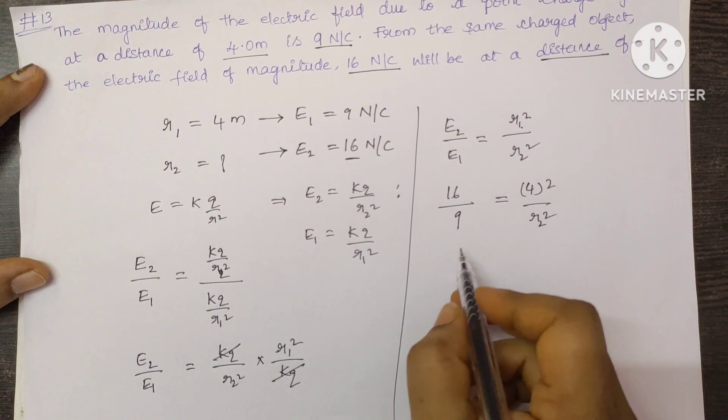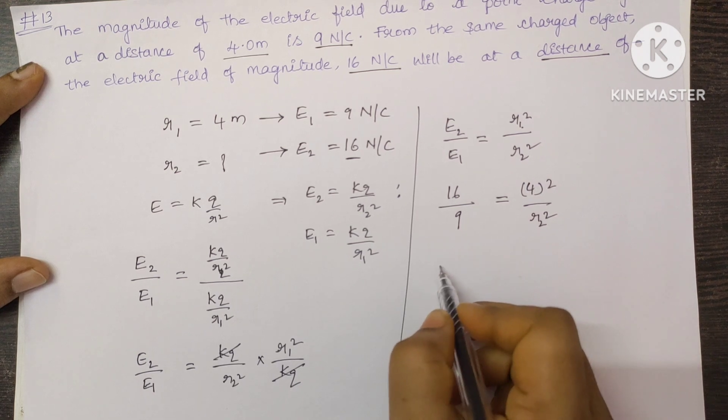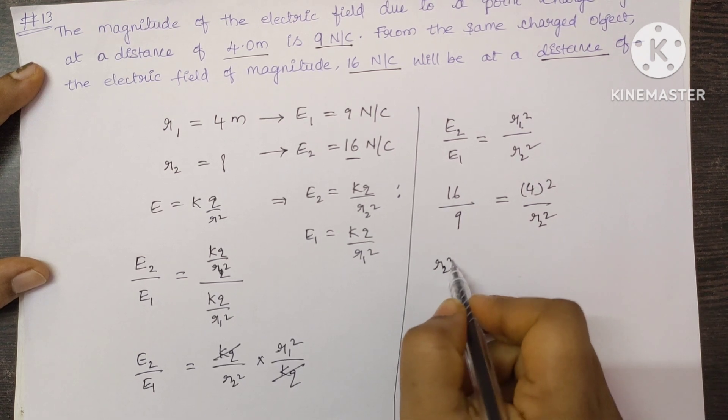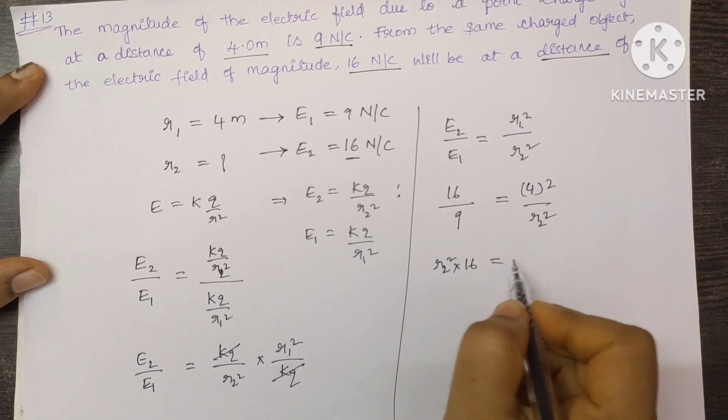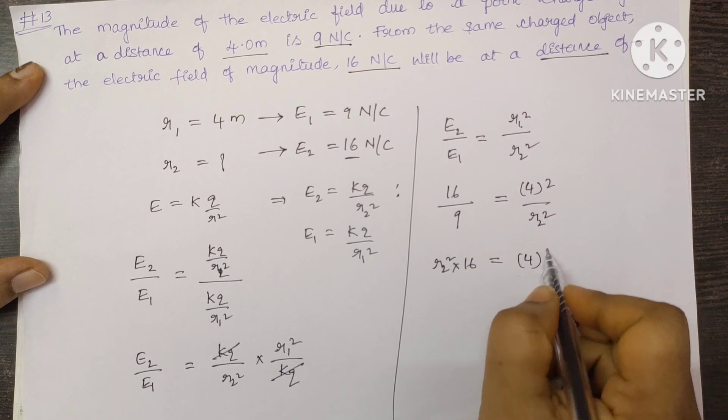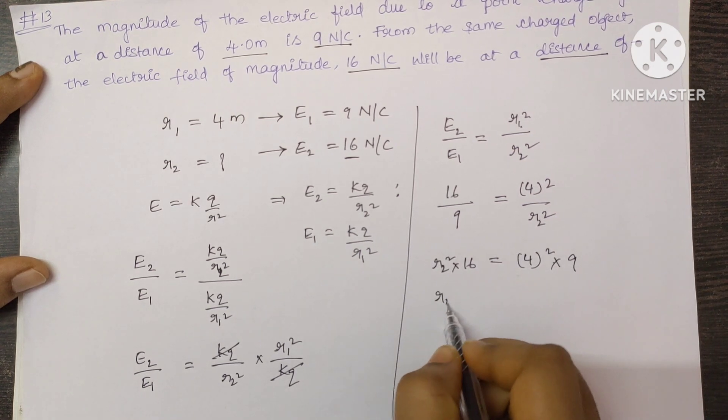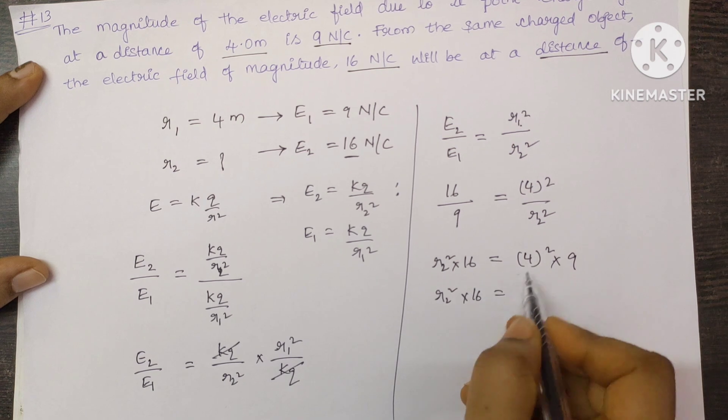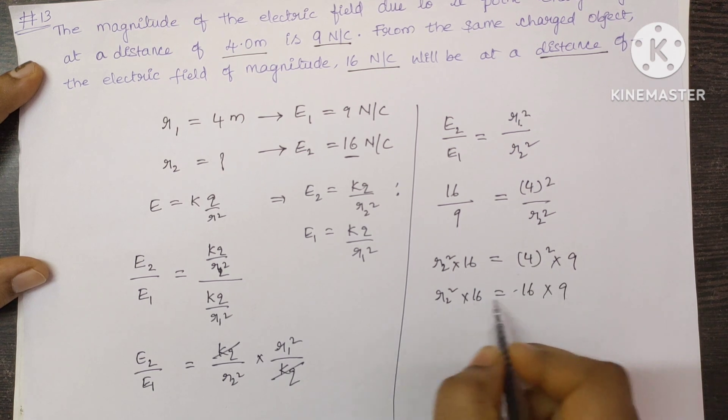Now do the cross multiplication. R2 square times 16 is equal to 4 square times 9, so R2 square times 16 is equal to 16 times 9.